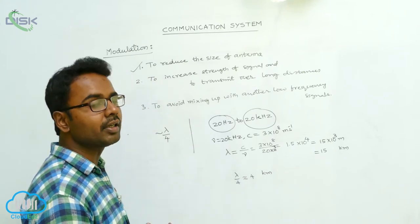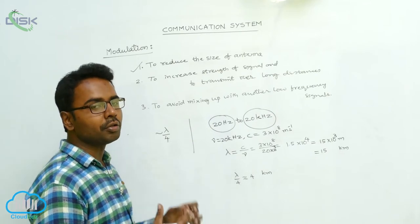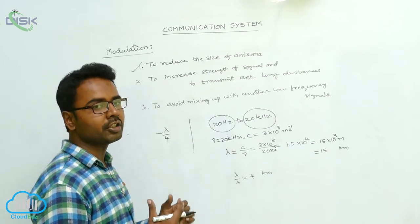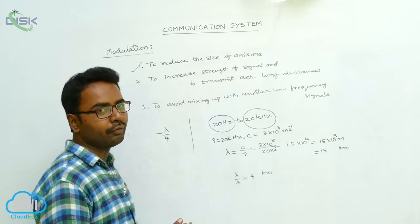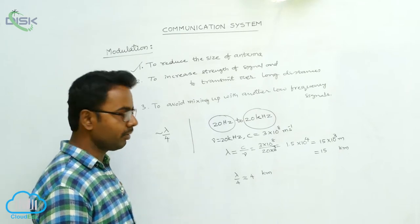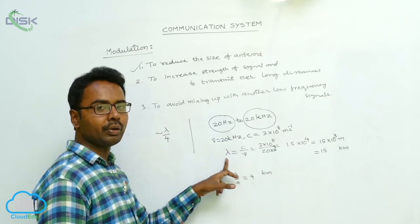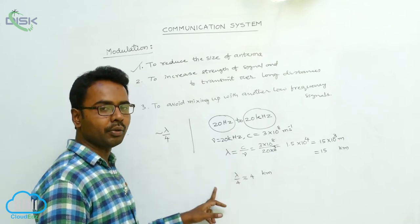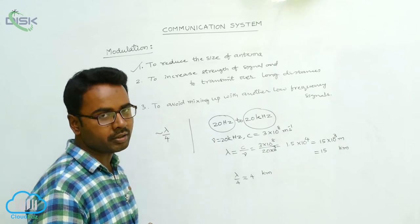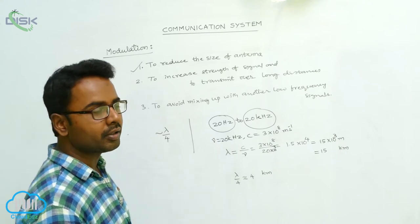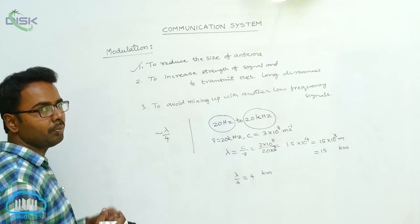That is the reason why we should do modulation of the signals. Modulation means we are mixing the low frequency signals with the high frequency signals so that the frequency will be increased. If the frequency increases, wavelength is reduced. If wavelength is reduced, the height of the transmitting and receiving antenna is also reduced. That is the reason why, to reduce the size of the antenna, we should do modulation.